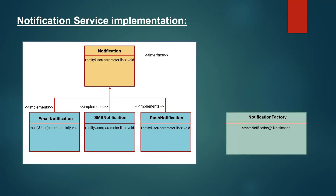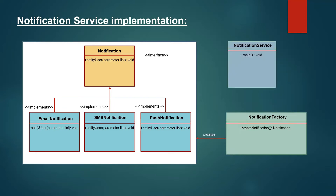Now we are going to create a NotificationFactory class which actually handles the instantiation of objects. This factory class will be used to create the objects. To test this design pattern, we will have a test class with a main method. This is the UML class diagram for the implementation.